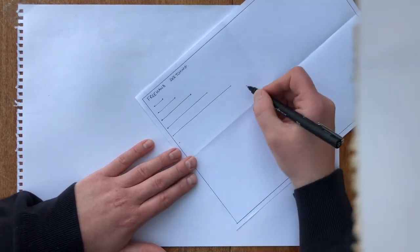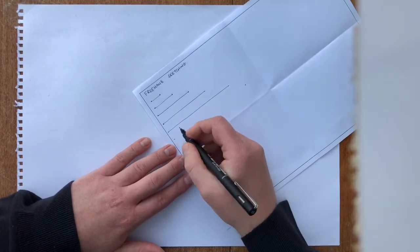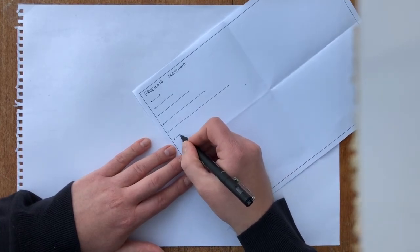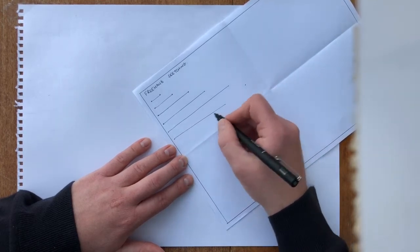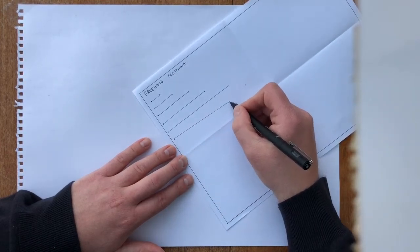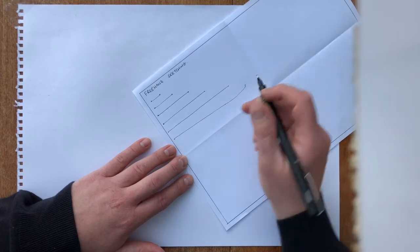Now I'm going to do a deliberate mistake on this one. One of the common things that happens is this. So you start to draw your line, but you haven't lined your paper up correctly.